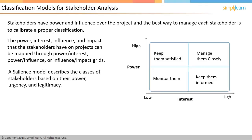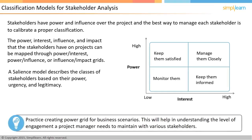The salience model describes classes of stakeholders based on their power — ability to impose their will — urgency — need for immediate attention — and legitimacy — appropriateness of their involvement level. This is a useful framework to guide the stakeholder management strategy on a project. Practice creating power grids for business scenarios, as this will help in understanding the level of engagement a project manager needs to maintain with various stakeholders.